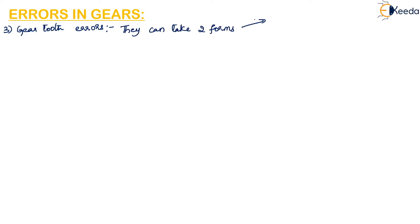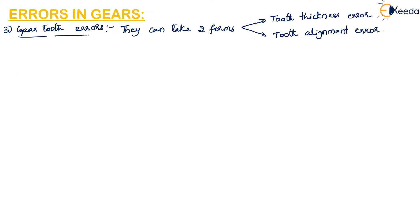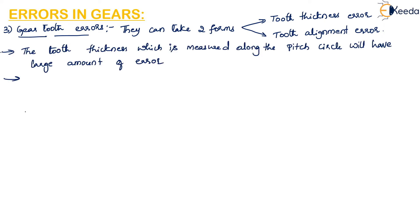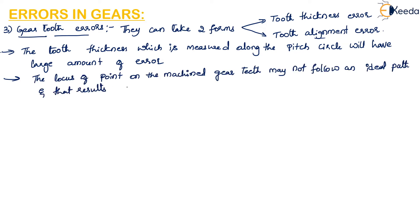The third type is gear tooth errors, which can take two forms: tooth thickness error or tooth alignment error. If it appears as a tooth thickness error, the tooth thickness measured along the pitch circle will have a larger amount of error. If there is an alignment error, the machined gear teeth will not follow an ideal path, resulting in loss of alignment.